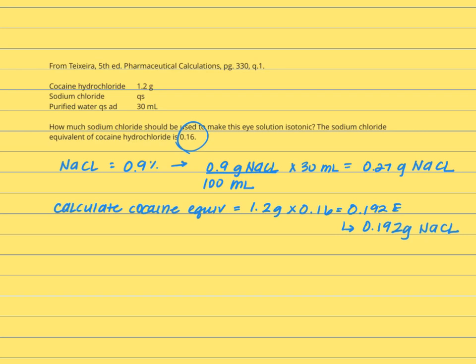Our final step is to subtract these two amounts to get the amount of sodium chloride needed. Once we've calculated the equivalent of cocaine hydrochloride, we use that information to subtract it from the total amount of sodium chloride that we determined we needed. The difference will be the amount of sodium chloride required for this prescription.